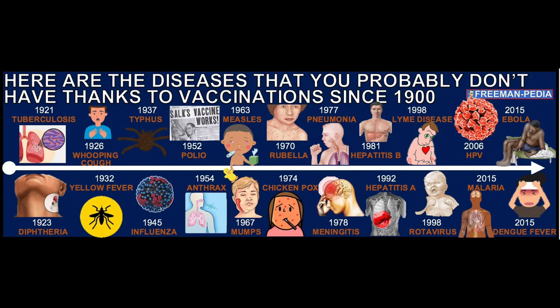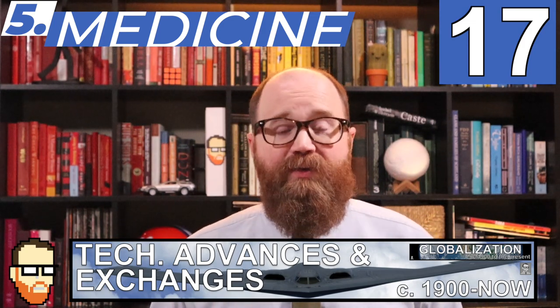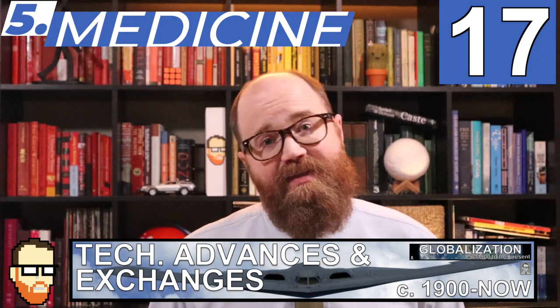You definitely have some vaccines coursing through your veins right now. Here are the diseases you don't have because of vaccines: tuberculosis, diphtheria, whooping cough, yellow fever, typhus, influenza, polio, anthrax, measles, mumps, rubella, chickenpox, pneumonia, meningitis, hepatitis B, hepatitis A, Lyme disease, rotavirus, HPV, malaria, Ebola, dengue fever. The next time you see someone spouting pseudoscience about vaccines, ask them how their polio is doing. The length, quality, and standard of living of all humans has been improved by advances in medical science and technology in the contemporary period.